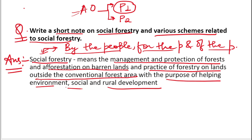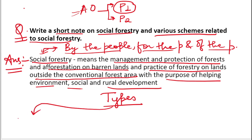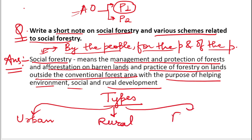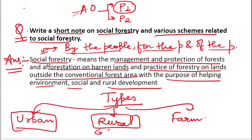Social forestry is of three types: urban forestry, rural forestry, and farm forestry. Urban forestry is done in urban areas — roadsides and parks. Rural forestry is developed in rural areas, generally developed by communities on community lands. Farm forestry is developed in agricultural land. So these are the three types of social forestry.